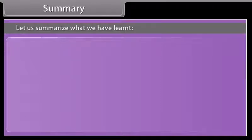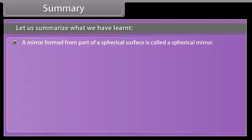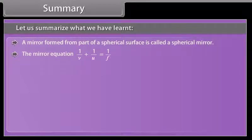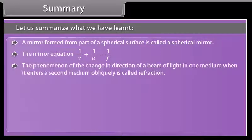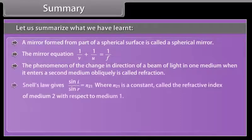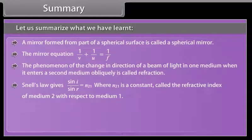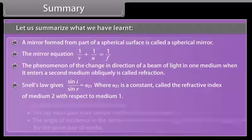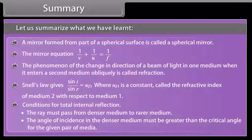Summary: A mirror formed from part of a spherical surface is called a spherical mirror. The mirror equation is 1/v + 1/u = 1/f. The phenomenon of change in direction of a beam of light when it enters a second medium obliquely is called refraction. Snell's law: sin i / sin r = n₂₁. Conditions for total internal reflection: the ray must pass from denser to rarer medium, and the angle of incidence must be greater than the critical angle for the given pair of media.